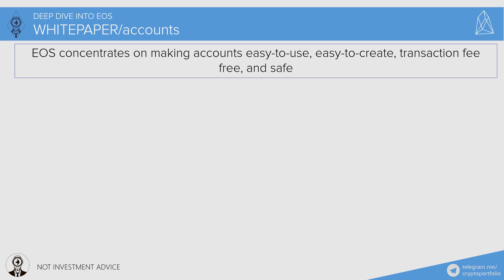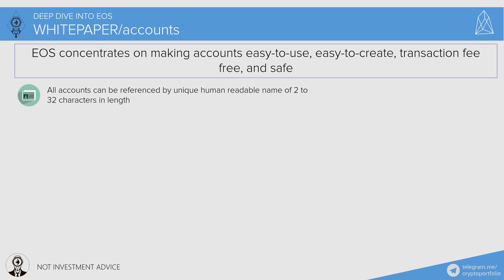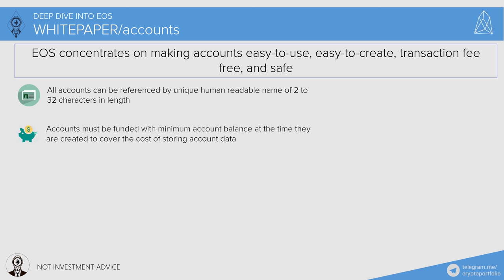Another big thing liked by many EOS investors is how accounts will function on this blockchain. EOS concentrates on making accounts easy to use, easy to create, transaction-fee free, and safe. All accounts can be referenced by a unique human-readable name of 2 to 32 characters in length. For example, I could create an account called "crypto portfolio" on EOS so you could donate tokens by simply writing my name. Accounts must be funded with a minimum balance at the time of creation to cover the cost of storing account data — user fees are non-existent, but the account must hold tokens to function.